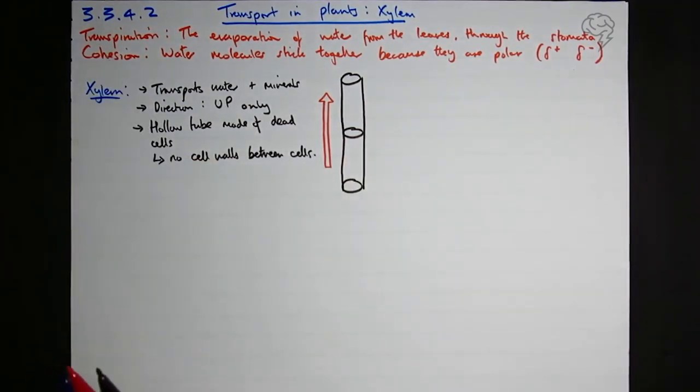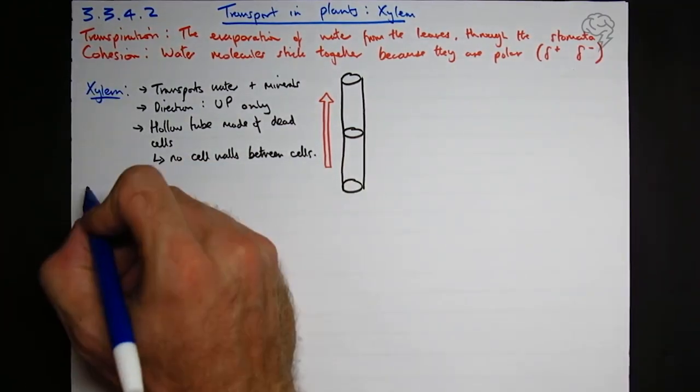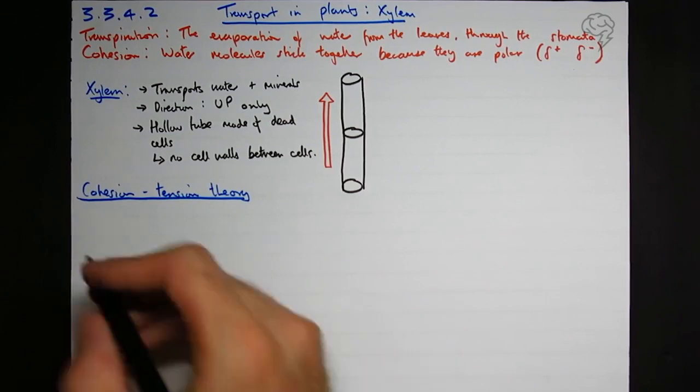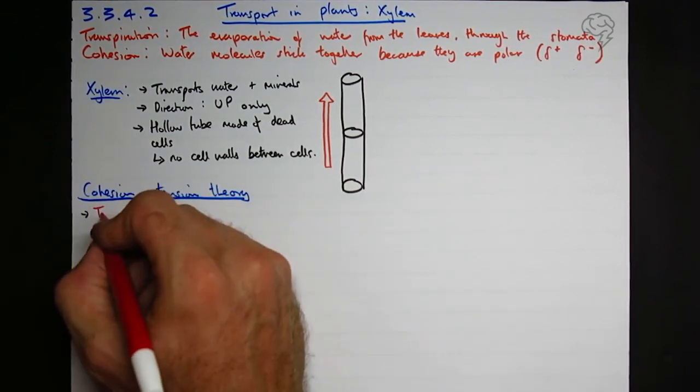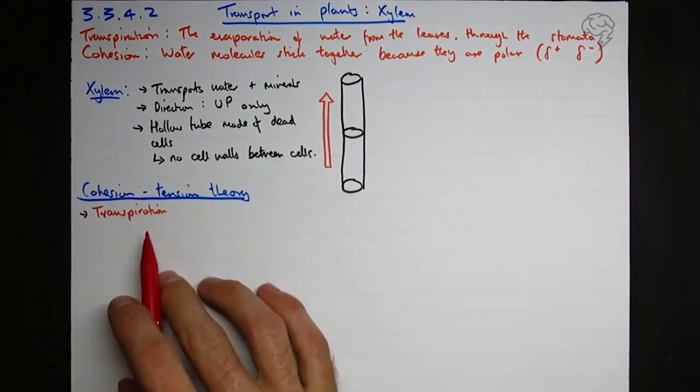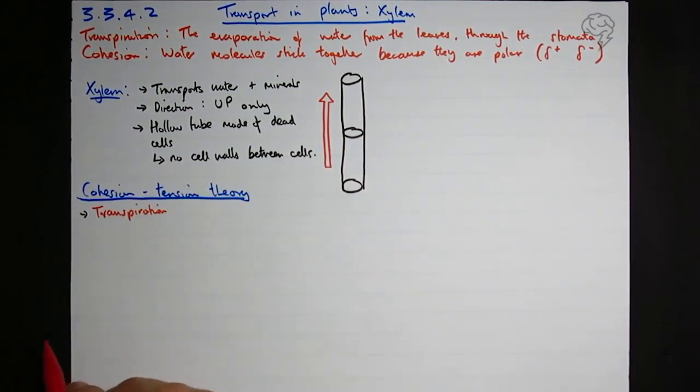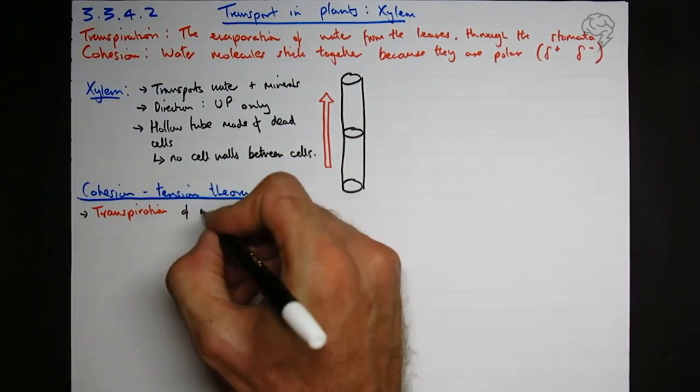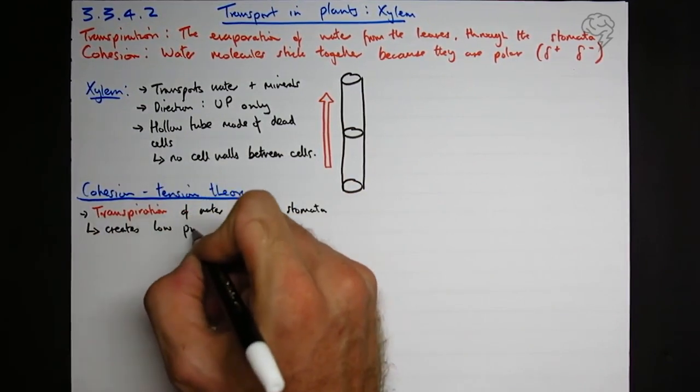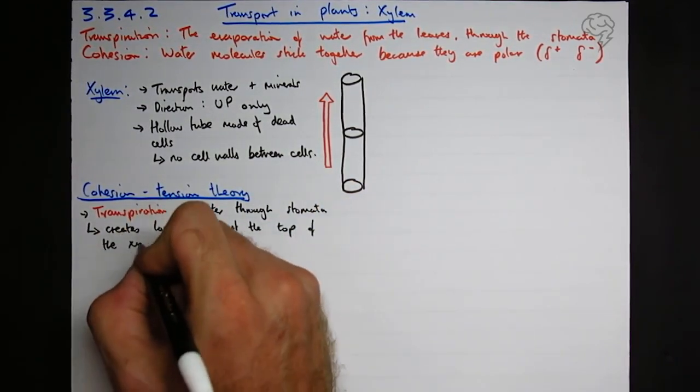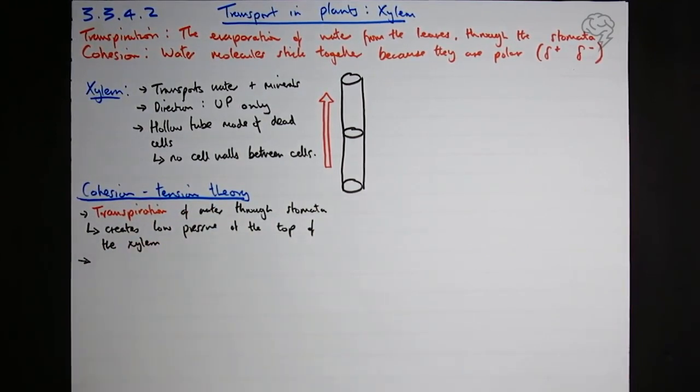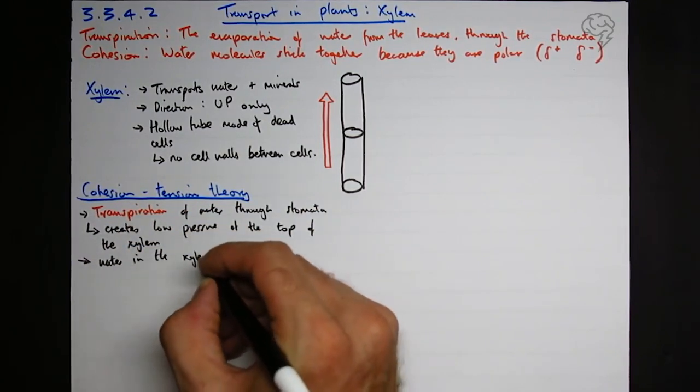Okay, so we're going to look at a little bit of cohesion tension theory. This is the theory by which water molecules get pulled up the xylem. So we're going to use our key term, first of all, transpiration. So transpiration is taking place whenever the cells photosynthesizing. It's respiring all the time. So whenever it's photosynthesizing, the stomata are open, water's going to come out the stomata, and that's going to create low pressure at the top of the xylem. Okay, so you've got low pressure, you've got a pull, basically. You've got a pull on the top of that water column, and that's what creates the tension.